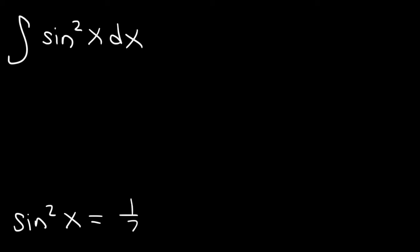Sine squared x is 1 half times 1 minus cosine 2x. So as you reduce the power, the angle doubles from x to 2x.